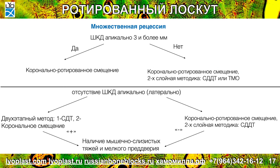Для множественных рецессий была предложена такая схема. При наличии ширины кератинизированной десны апикально 3 и более миллиметра, то есть если она вообще есть и можно перемещать, тогда применяется один вид методик. Если же она отсутствует апикально и латерально тоже, тогда предлагаются другие методы, в том числе двухэтапные.